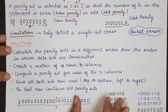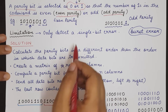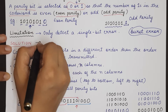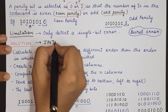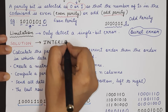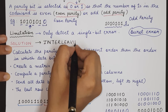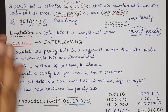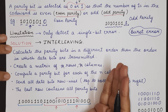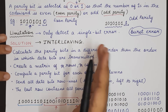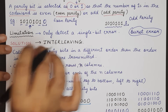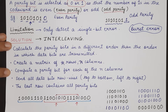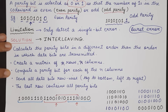The limitation of parity bit is that it can only detect a single bit error. The solution for detecting multiple errors or burst errors is a technique called interleaving. Interleaving says that instead of arranging data linearly, you arrange it in the form of a matrix and transmit the data in a different order than the original.